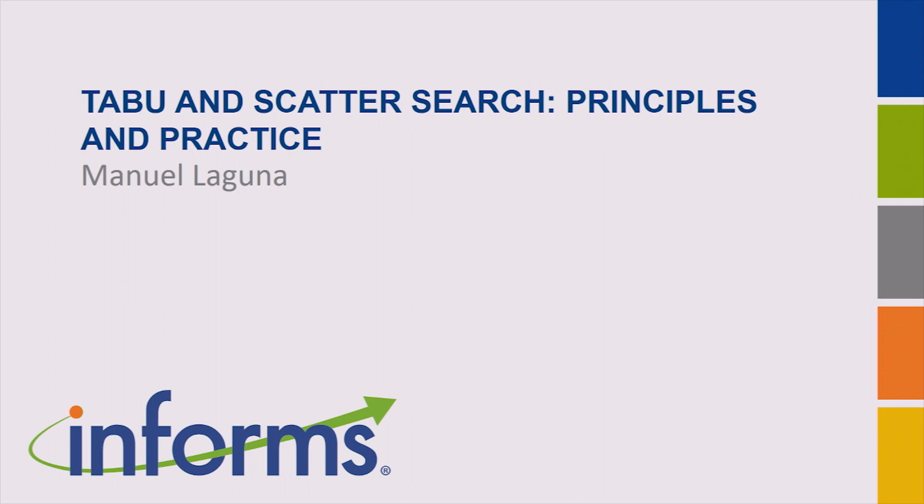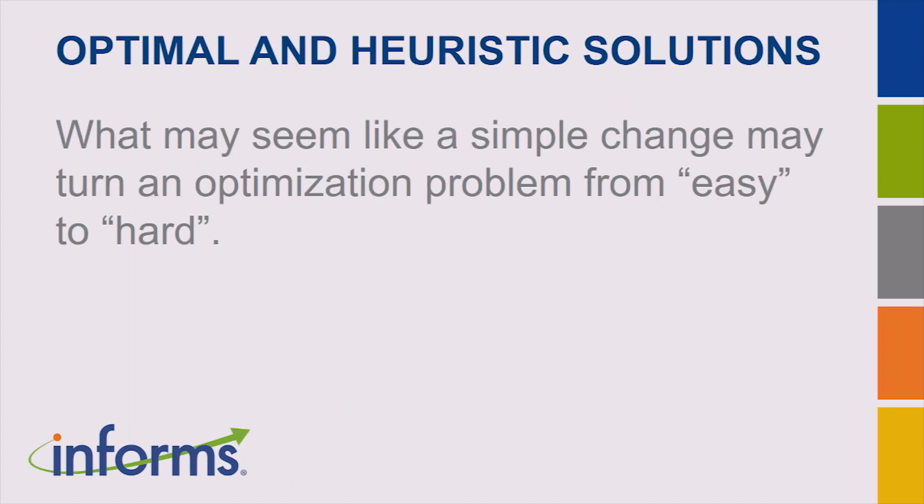We're going to talk about tabu search and scatter search — topics I spent many of my academic years working on. Let's start by framing why we want to use scatter search and tabu search, and this idea of optimal solutions versus heuristic solutions. One interesting thing about combinatorial optimization is that sometimes you have really easy problems, and small changes to these easy problems make them really hard — the change could seem trivial, but finding a solution is far from trivial.